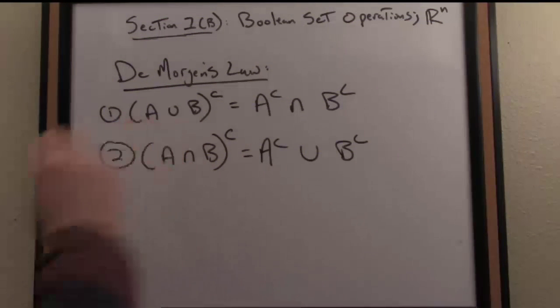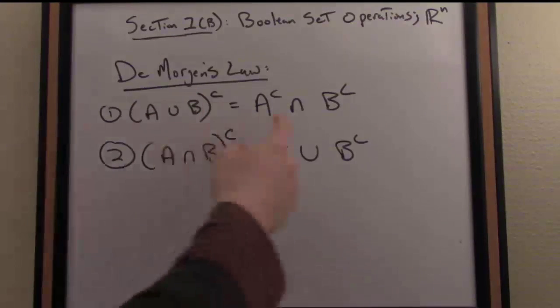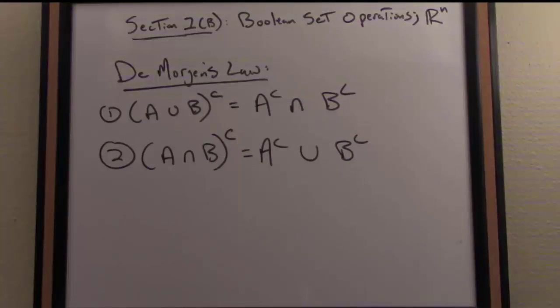So notice what's happening in Variant 1 here of De Morgan's Law. When I take the complement of the union of two sets, I get the intersection of their respective complements. Let's represent this set A just as an expression. Let's say A will represent, for our example here, the notion that it's raining or the event that it's raining, and let's say B is going to represent the event that I go to work. What does this mean on a logical level then?